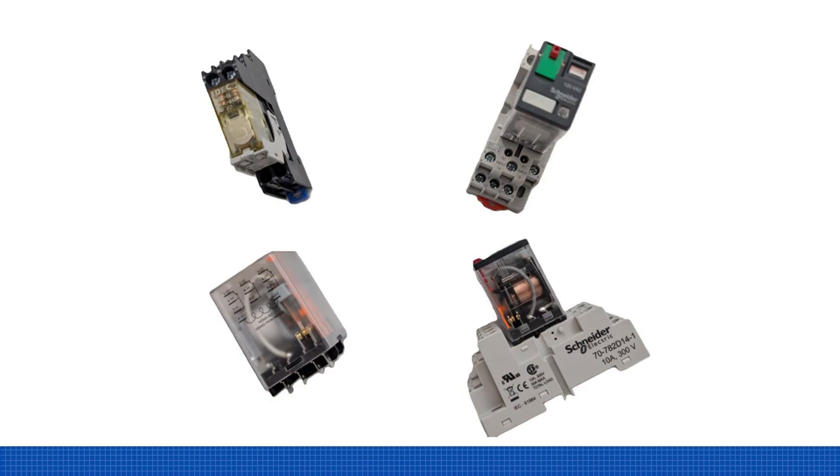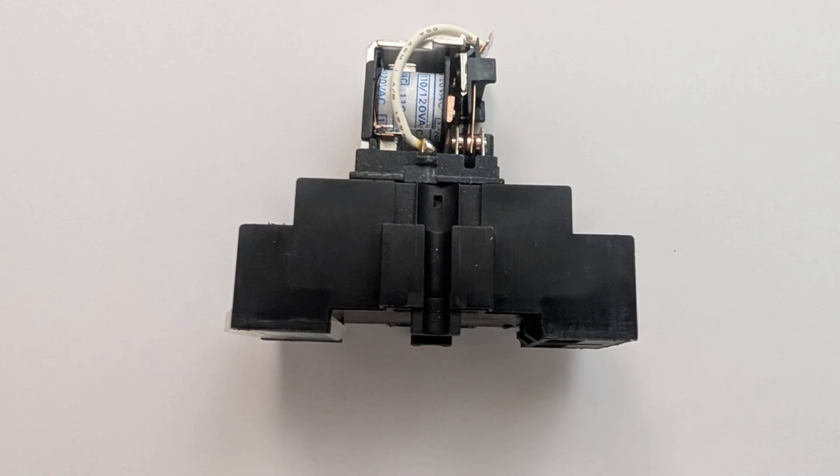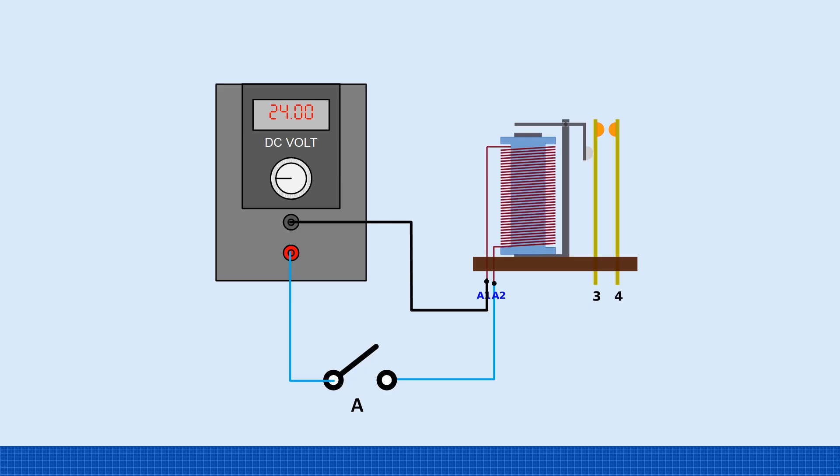So what is an electromechanical relay? At its core, an electromechanical relay is a switch that opens or closes using a magnetic coil and moving contacts controlled by an electrical signal. A relay consists of a coil, an armature, and contacts.